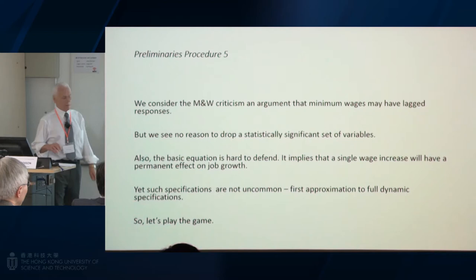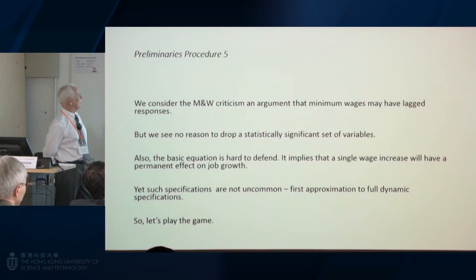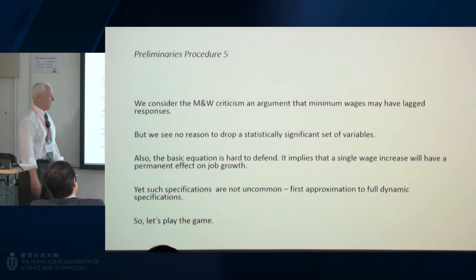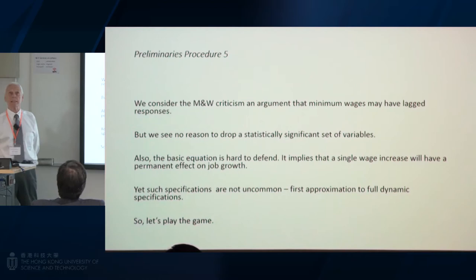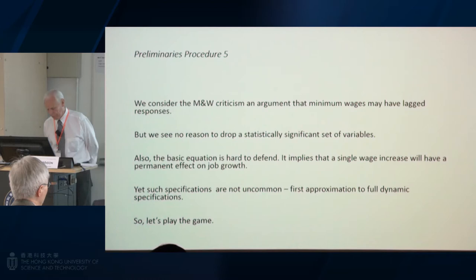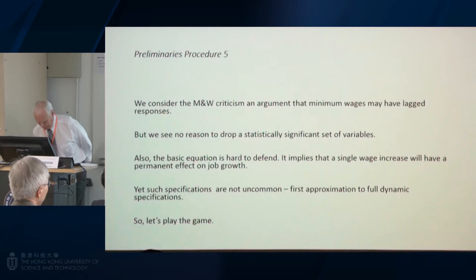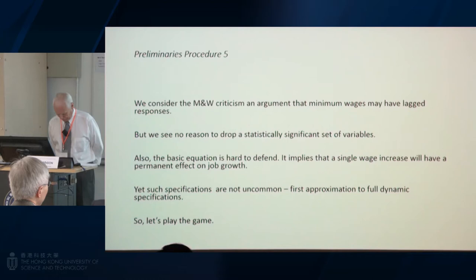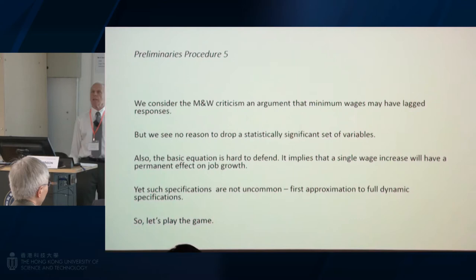Now let's get on to the Meir and West application. We basically consider the Meir and West criticism an argument that minimum wages may have lagged responses. But we see no reason to get rid of a statistically significant variable such as the geographic specific linear trends for two reasons: there's no collinearity problem in our data, and minimum wages are not causing a fall in the trend in employment growth in areas raising the minimum wage — the evidence is to the contrary.